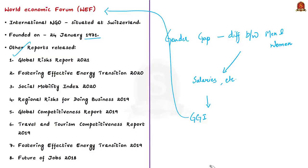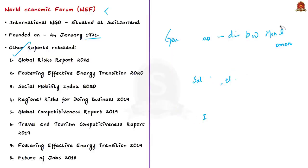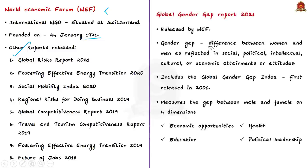Recently, the World Economic Forum released its Gender Gap Report of 2021. This report is based on the Global Gender Gap Index, which was first introduced by the World Economic Forum in the year 2006. The report tries to measure the gap between the two major gender groups through a social frame. It considers four dimensions: economic opportunities, education, health, and political leadership.